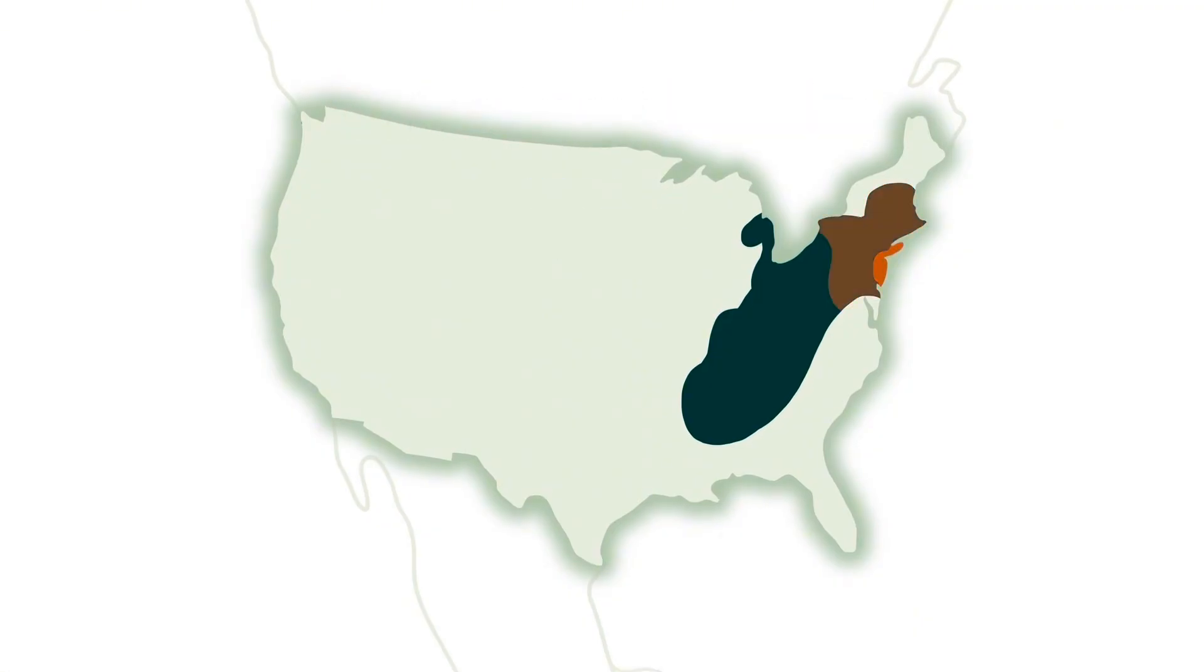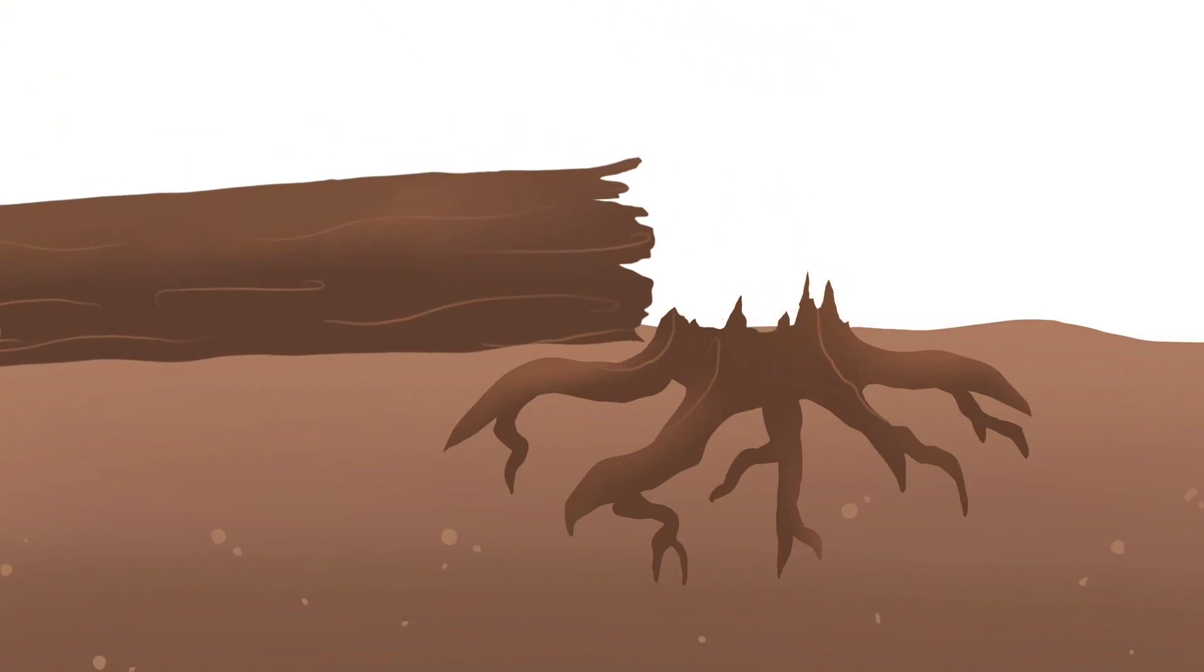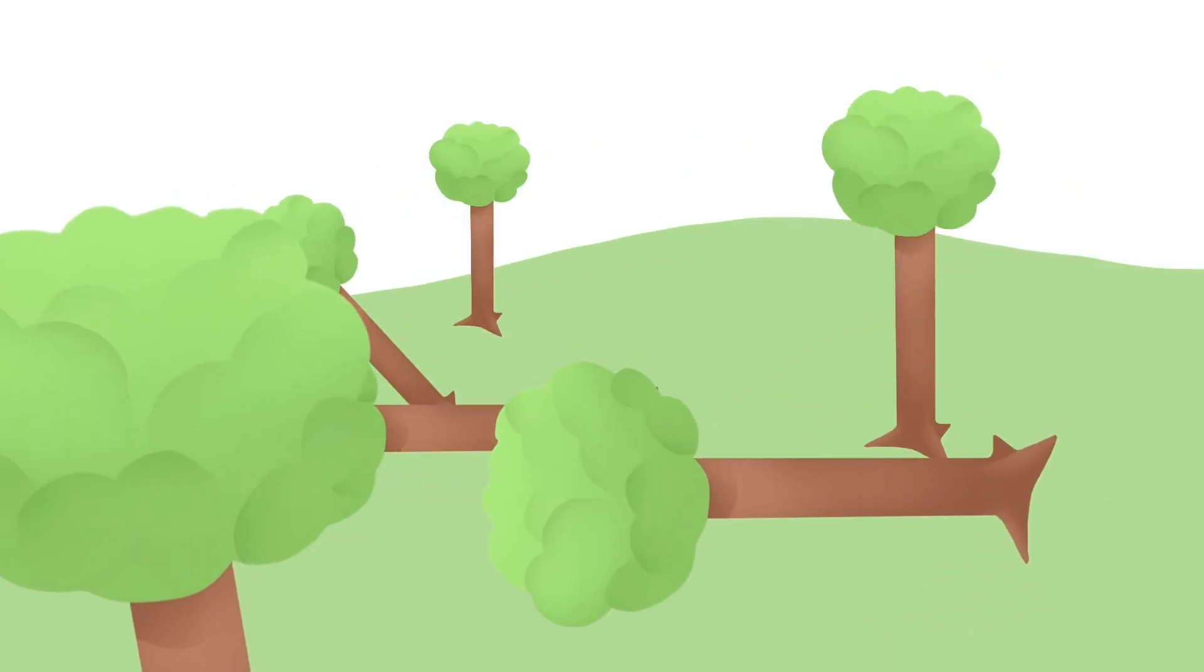Within 50 years, chestnut blight had spread throughout the entire range. The blight caused cankers in the bark which strangled the tree, killing it down to the roots. Some root systems survived and sent up sprouts, only to die back again from blight before they could produce nuts. The tree is now considered functionally extinct because it rarely reproduces in the wild.